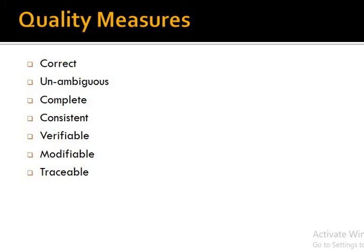Traceable means we can trace both directions — backwards and forwards. Try to write requirements not in terms of compound statements but simple sentences, so that we can modify and trace them to previous or next stages. These are the quality measures we study for requirements. That is all about today's lecture, in which we have seen different technical methods for requirements description, the state transition diagram, and finite state machines — if your system is deterministic, you can draw a finite state machine diagram.